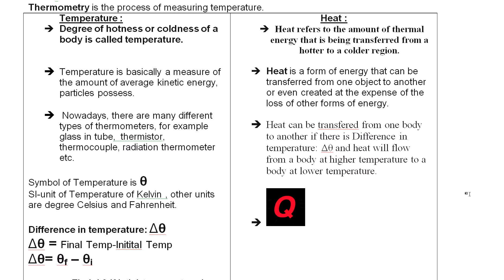We usually do not just measure temperature but also measure temperature difference. Temperature difference is denoted by the symbol delta theta (Δθ), where Δθ represents the final temperature minus the initial temperature. So Δθ = θF − θI. Theta F is the final temperature and theta I is the initial temperature.